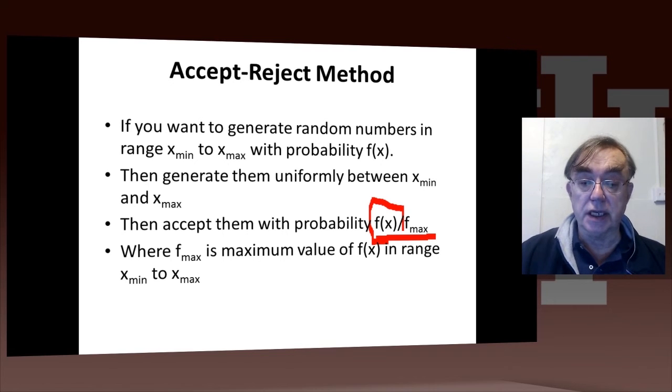You can see that this will give you a set of random numbers between Xmin and Xmax, which are distributed according to this probability f(x).